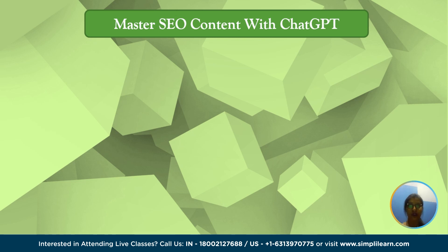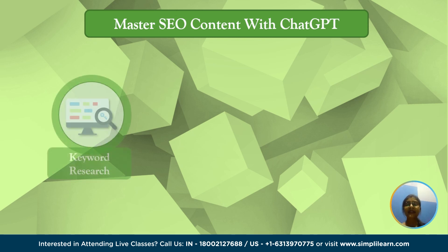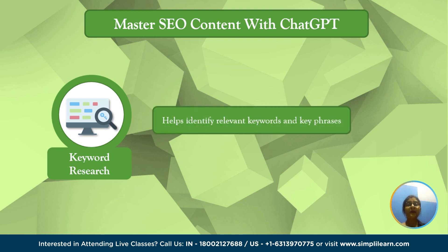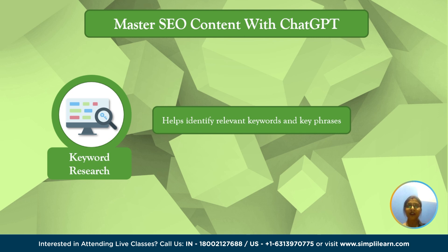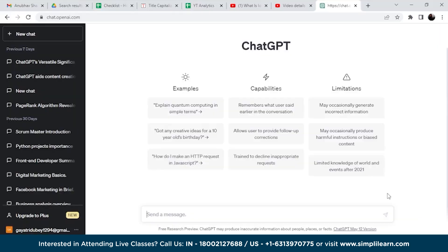So without any further ado, let's begin. ChatGPT can assist you with content SEO, or search engine optimization, in the following ways. Number one is keyword research. ChatGPT can help you identify relevant keywords and key phrases that are commonly used in your industry or required for your topic, by discussing your content with ChatGPT.